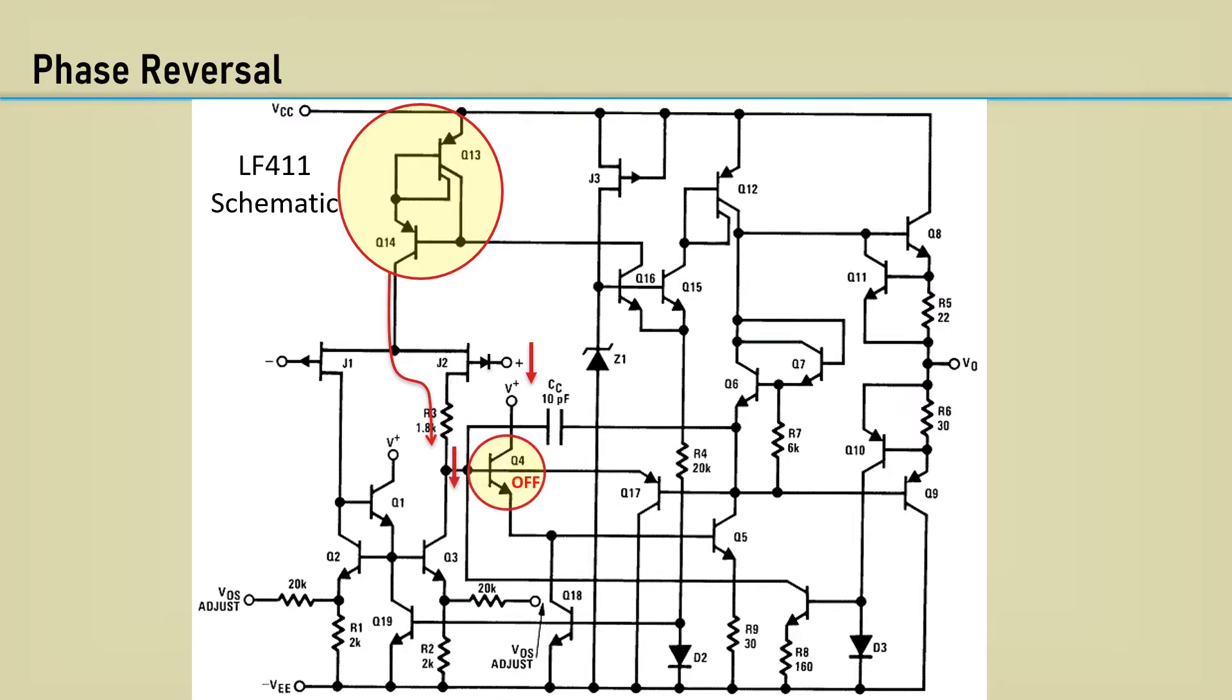Q4, being an emitter follower, it then turns off Q5. Q5, being a common emitter amplifier, its collector goes high, which then allows Q6 to turn on, and the output voltage goes high. It's doing the opposite of the expected response, and hence the term phase reversal.